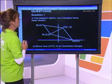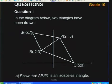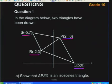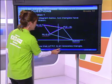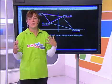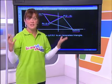This is a fairly typical Grade 10 question. We have a diagram showing two triangles: triangle SRP and triangle PRQ. We can clearly see all the coordinate points for each vertex. The first question asks us to show that triangle PRS is an isosceles triangle — that is, a triangle with two equal sides. We'll use the distance formula to prove the lengths of the sides.